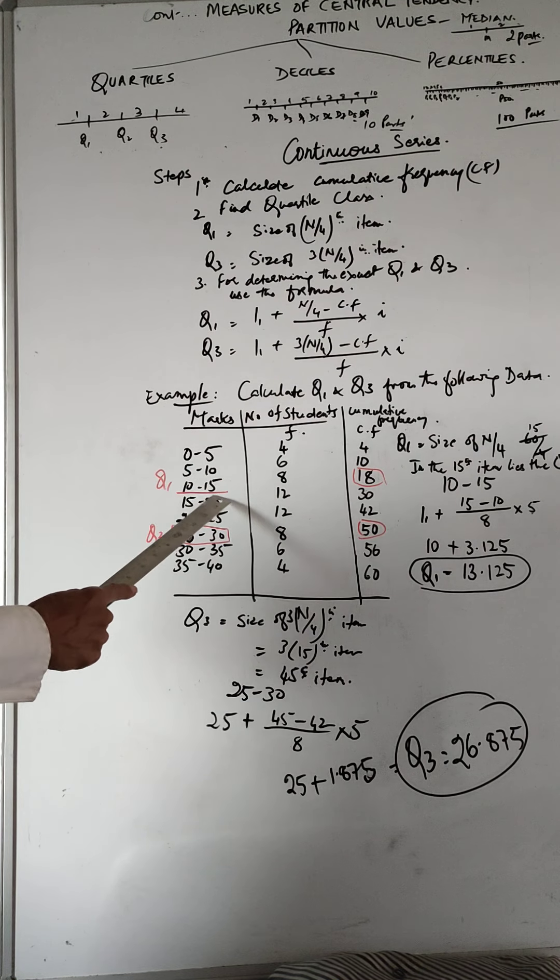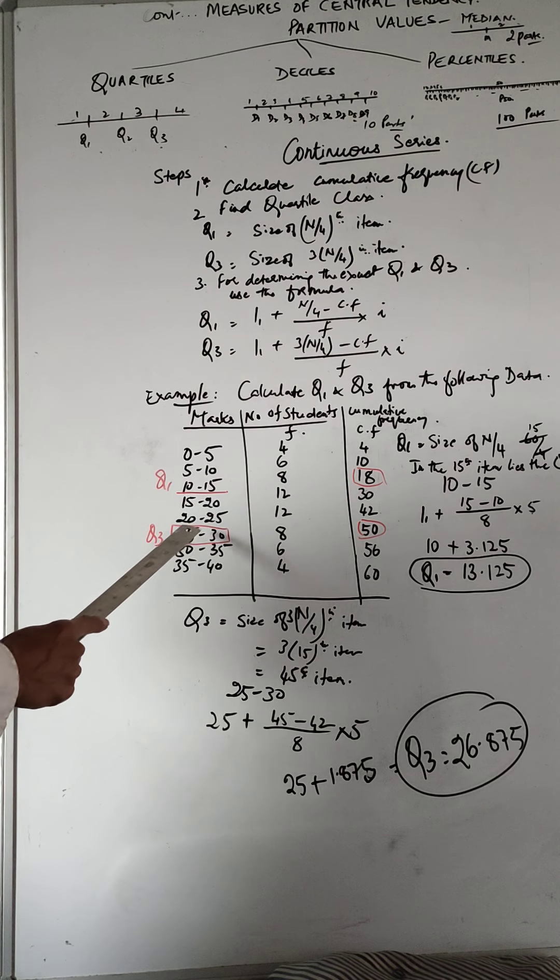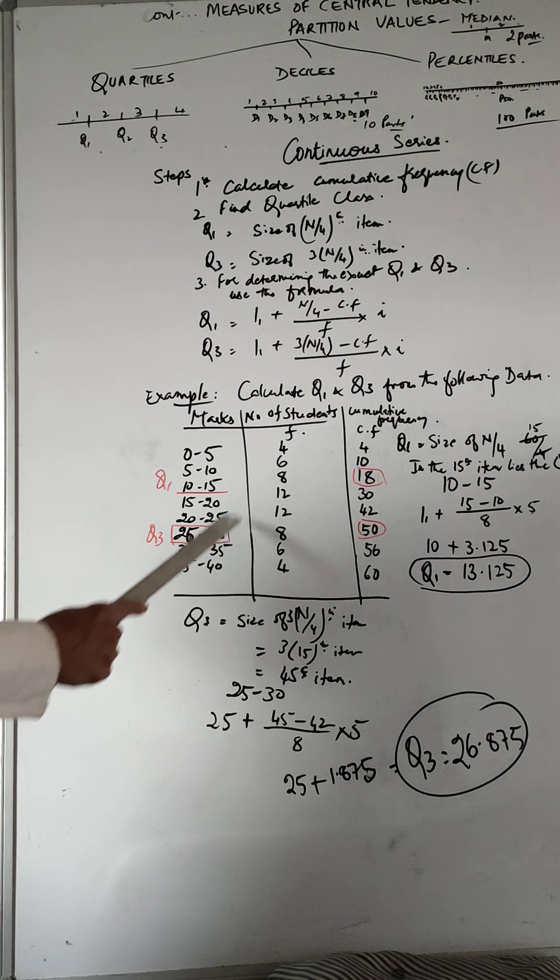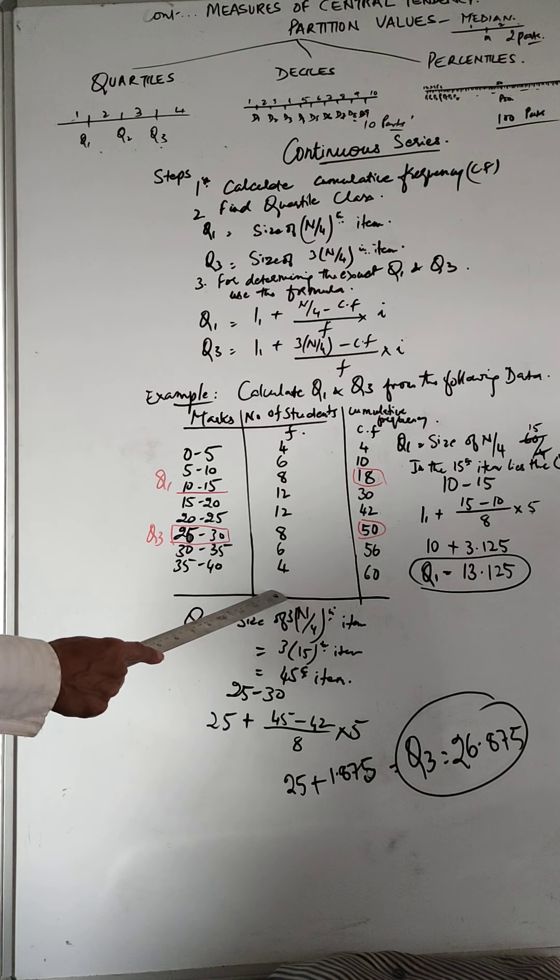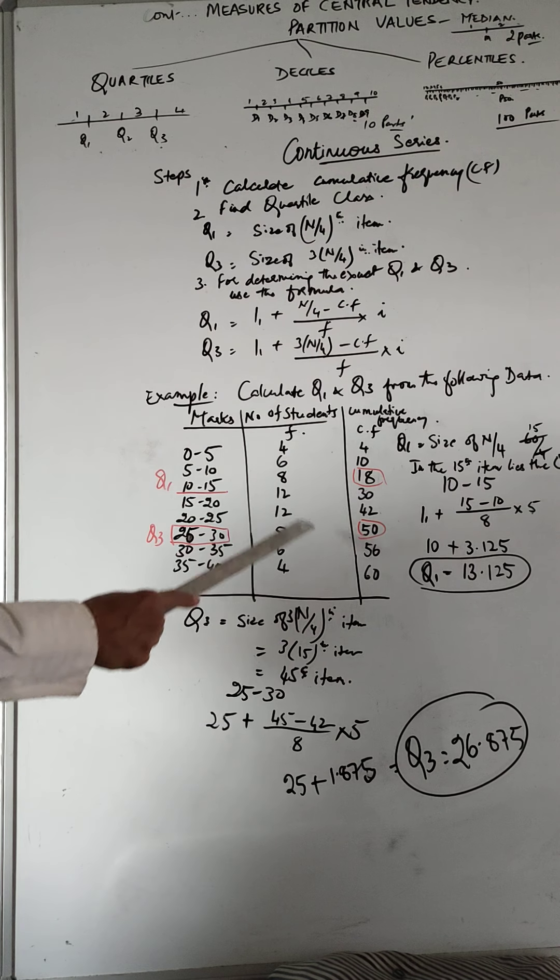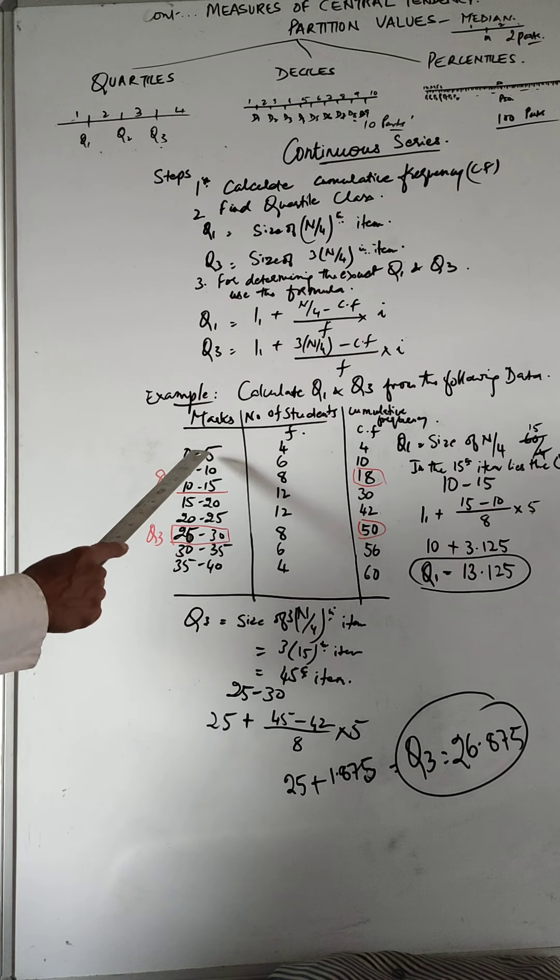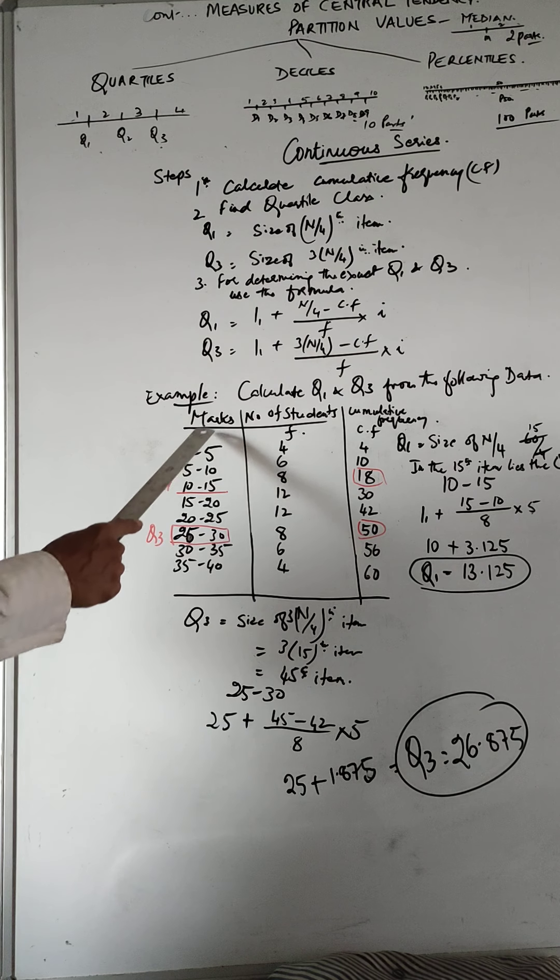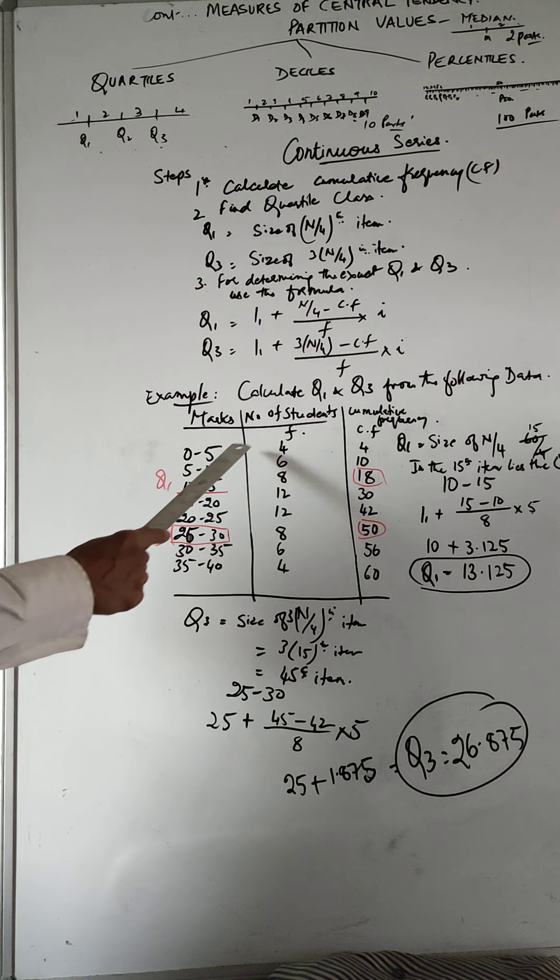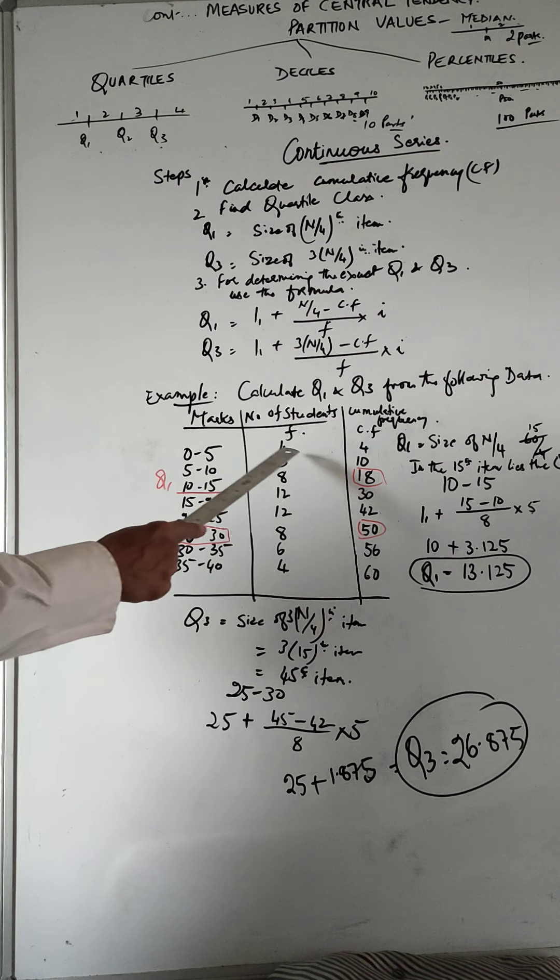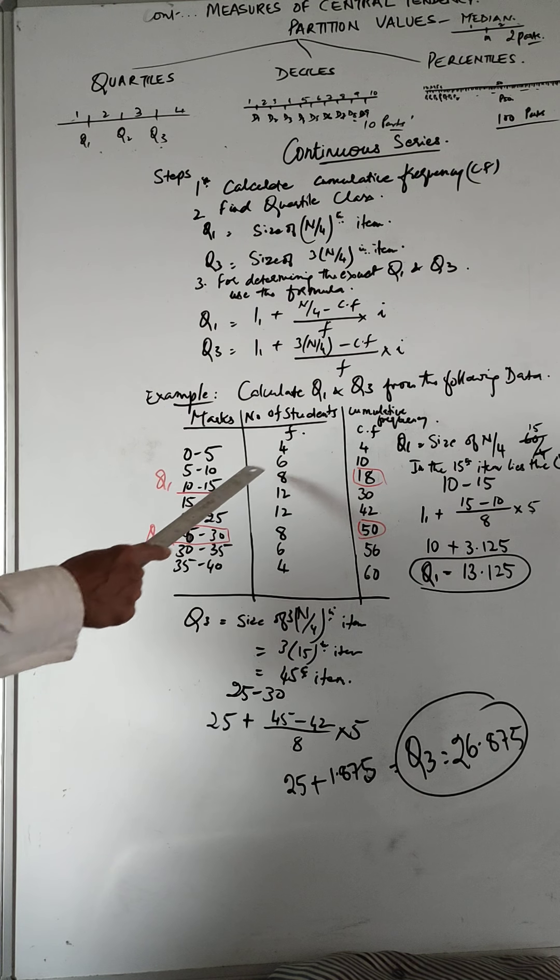5 to 10, 10 to 15, 15 to 20, 20 to 25, 25 to 30, 30 to 35, 35 to 40, and these are the corresponding frequencies given. So marks and number of students. 0 to 5, 6 students got marks within the range of 5 to 10,